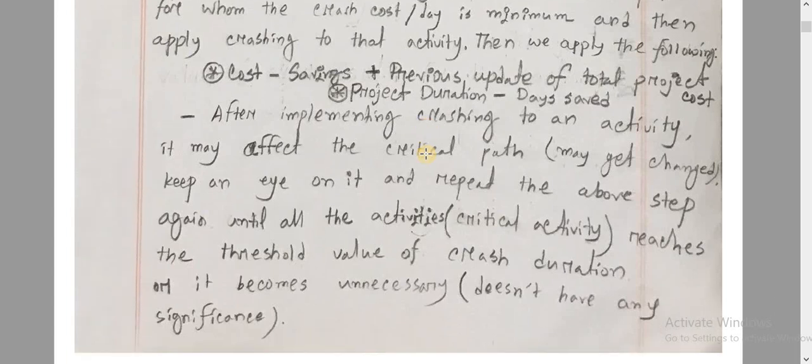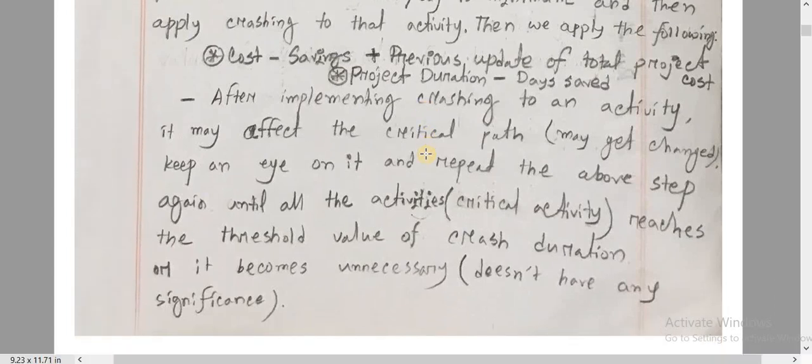The third step: after implementing project crashing on an activity, it may affect the critical path. So the critical path may get changed. We have to keep an eye on it and repeat the above steps.